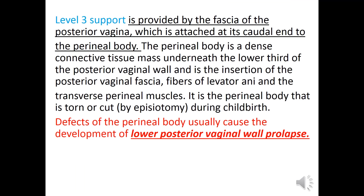Level 3 support is provided by the fascia of the posterior vagina, which is attached at its caudal end to the perineal body. The perineal body is a dense connective tissue mass underneath the lower third of the posterior vaginal wall, and is the insertion of the posterior vaginal fascia, fibers of the anal sphincter, and the transverse perineal muscle. It is the perineal body that is torn or cut by episiotomy during childbirth. Defects of the perineal body usually cause development of lower posterior vaginal wall prolapse.